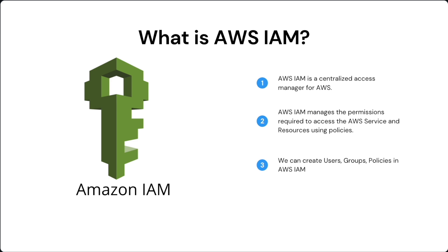AWS IAM is a service that helps you to secure your AWS account. In IAM you can create users, groups, policies, and roles for better access management. You can allow or deny access to a particular AWS service using IAM. AWS IAM provides security tokens to each request, so only authorized identities can access the AWS service.